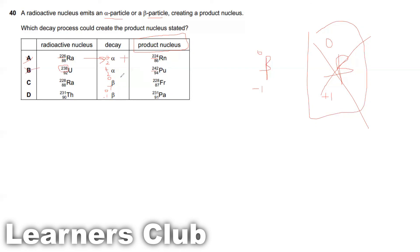Then 0 plus 228, that's 228 which is right. 87 minus 1 should be 86. Instead there is 88, so that's not the answer. 0 plus 231 is 231. Minus 1 plus 90 is 89. So option D is correct.